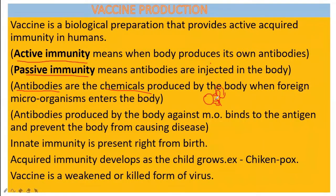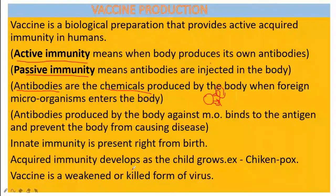And we are disease-free. Now, what is innate immunity? There are two types of immunity: innate immunity and acquired immunity. Innate immunity means the immunity which is present right from birth.